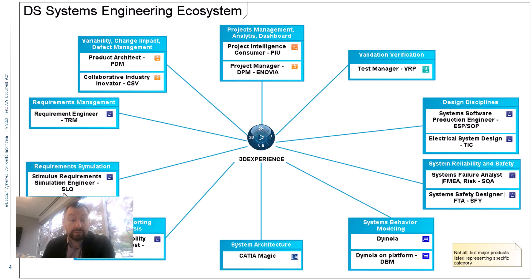For requirements analysis, we have requirements traceability, reporting, and impact analysis. Traceability delivers configuration management traceability — tracking which models and which versions of models we are tracing. We can create specific traceability and recognize it through patterns. We also get the ability to see change impact — when linked data is changed, we see the suspect links.